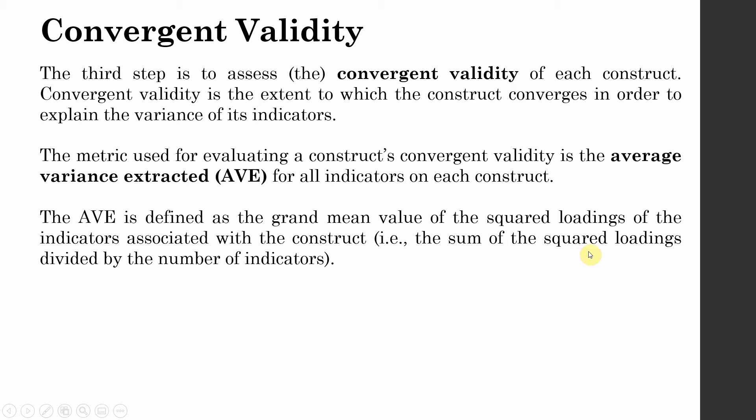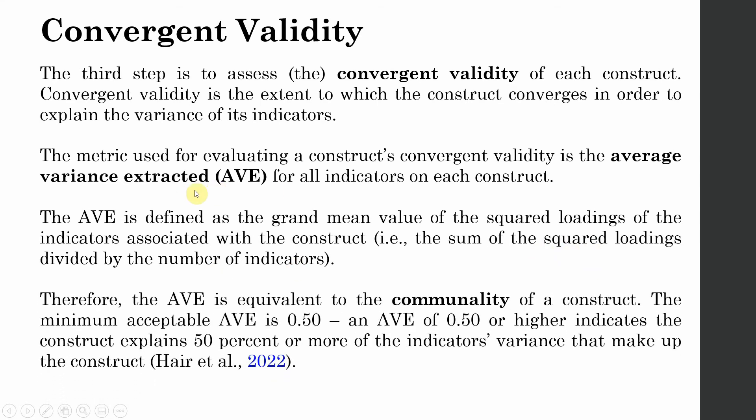Now once the squared loadings are summed, they are divided by the number of indicators and this will give us the average variance extracted for all the indicators on each construct. Now this has to be done separately for all the constructs in your study.